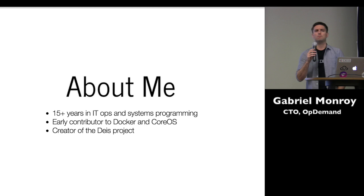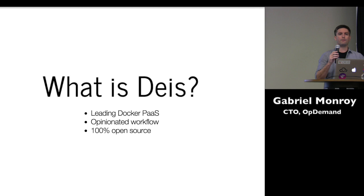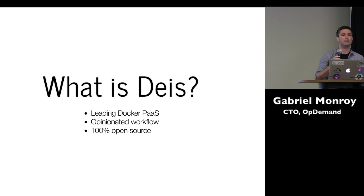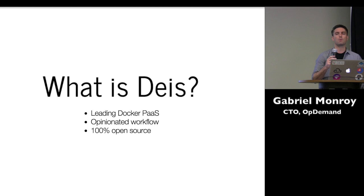I was also an early contributor to CoreOS, less in code and more in usage. I think we were probably one of the first major projects to actually adopt CoreOS and deploy it at scale across large numbers of companies. I'm probably best known for the Deis project. Deis is, at this point, fair to say the leading Docker PaaS — a platform as a service that not only deploys Docker containers natively, but the platform itself is built as a series of Docker containers, which makes it incredibly easy to hack on.